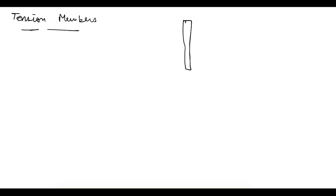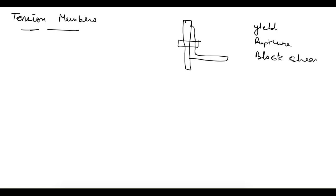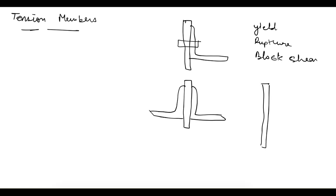Last time we saw the design of tension members. Here I want to add some more points to that discussion. Earlier we solved one example where we found out the design strength of an angle section — we used one angle section connected using bolts, checking design strength in yielding, rupture, and block shear. The minimum of the three gave us the design strength. Now, instead of one angle section, what if we connect two angle sections on opposite faces or on the same face?